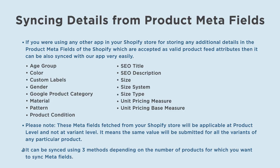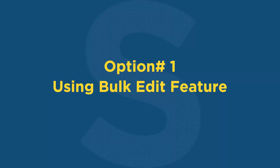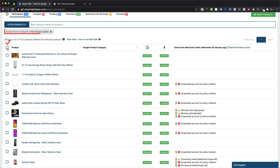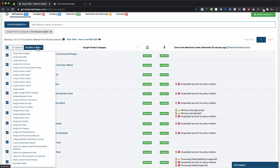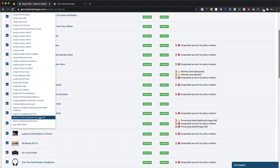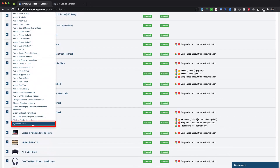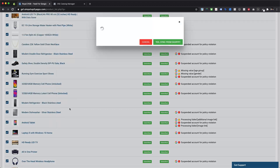It can be synced using three methods depending on the number of products for which you want to sync meta fields. The first option is syncing meta fields for a selected group of products using the sync meta fields option from Do Edits in Bulk.